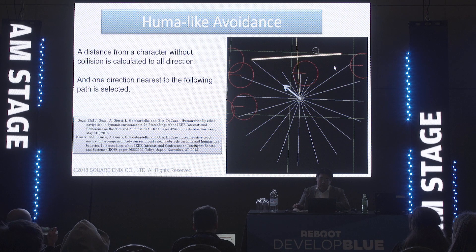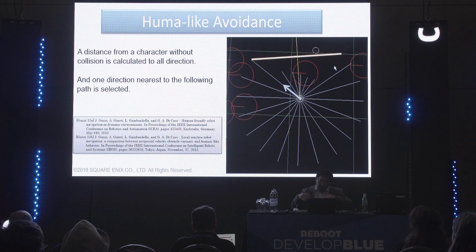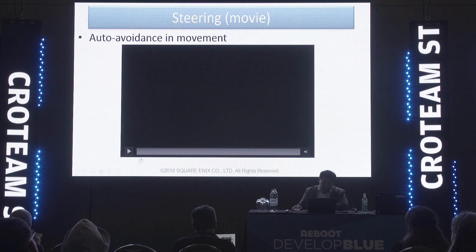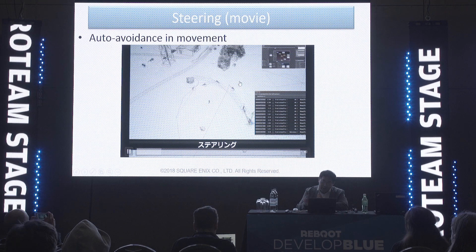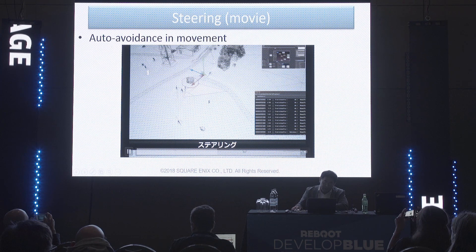Next is the steering system — an avoidance system between characters. For example, when many characters rush to the same point, they should avoid each other. This algorithm was developed from robotics; we use human-like avoidance. Each character predicts the opposite character's behavior, so they can find a safe path around each other. That is the auto-avoidance system in movement.